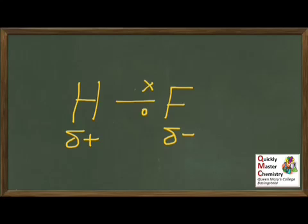This bond is now said to be a polar bond or to have a permanent dipole. Of course, this leaves the question of how you know whether one atom in a covalent bond is more or less electronegative than the other atom.